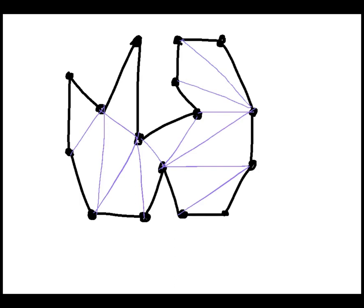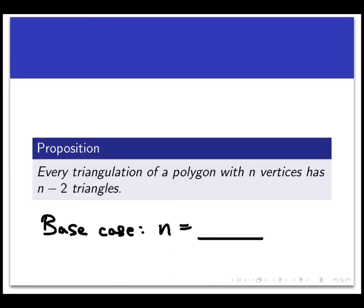So I know this is just a couple of examples, but do you feel like making a conjecture at this point? Pause the video and write out what you think the conjecture ought to be. How many triangles are in a triangulation of a polygon with n vertices? So it seems like this ought to be the right conjecture: Every triangulation of a polygon with n vertices contains n minus 2 triangles.